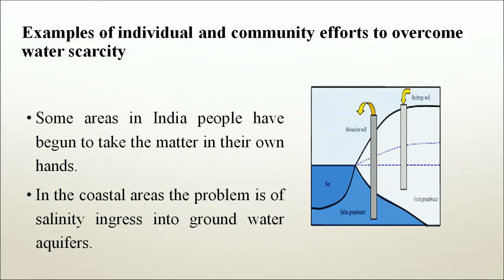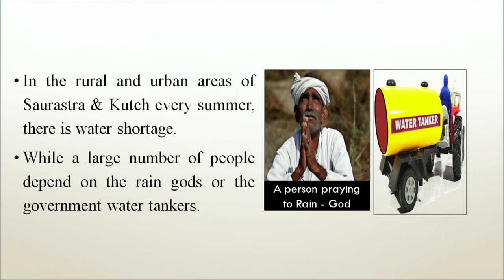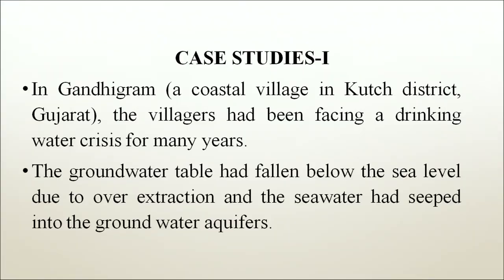In the coastal areas, the problem is of salinity increasing into groundwater aquifers. In the rural and urban areas of Saurashtra and Kutch, every summer there is water shortage, while a large number of people depend on rain, God, or government water tankers. In Gandhigram, a coastal village in Kutch district Gujarat, the villagers have been facing a drinking water crisis for many years. The groundwater table had fallen below sea level due to over-extraction and sea water had seeped into the groundwater aquifers.